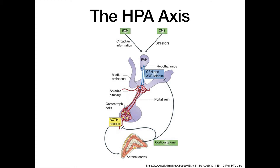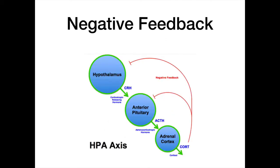A key feature of the HPA axis is a complex negative feedback system. When glucocorticoids — cortisol — are released from the adrenal gland and levels are high, that should down-regulate both the hypothalamus and the pituitary. If there's a lot of cortisol in the blood, you don't need to keep making more, so we see inhibition of both the hypothalamus and the anterior pituitary. When glucocorticoids are released, they down-regulate the HPA axis.